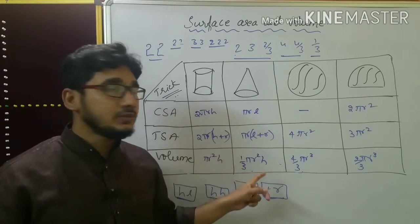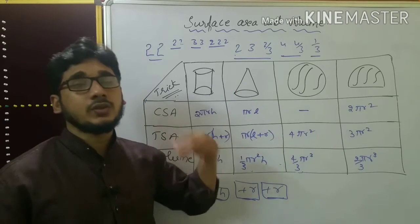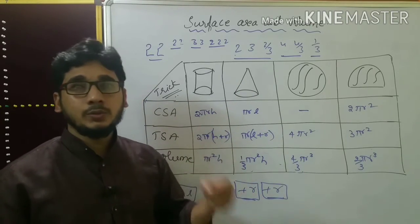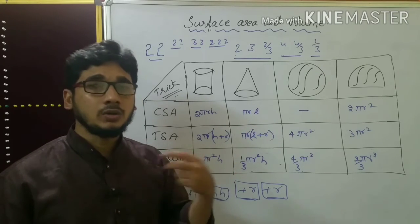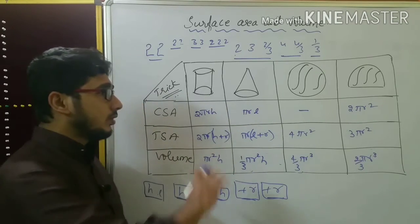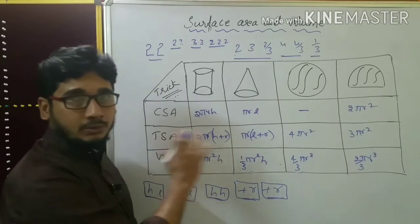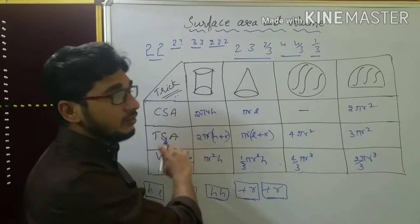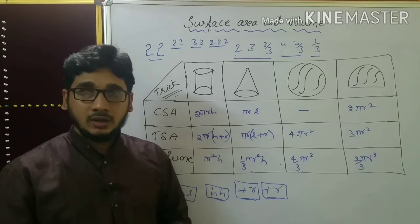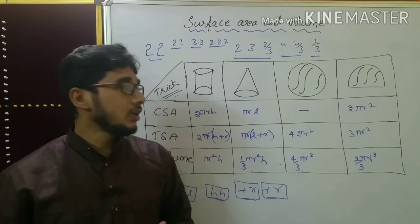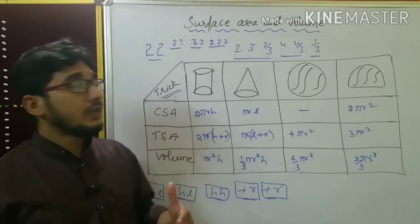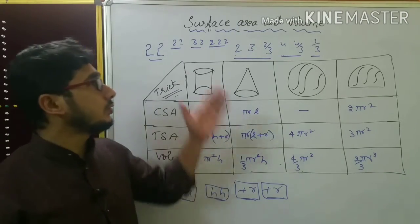In the next class I will tell the further 3 formulas generated from the frustum of cone, and cube and cuboid give 3 plus 3 equals 6 formulas — altogether 9 more formulas I will tell you. Before that, remember this poem, try to frame the table and learn it at home, then put it in the comments whether you have understood or where you are finding it difficult.